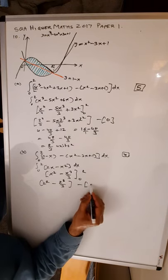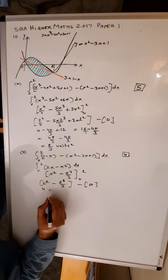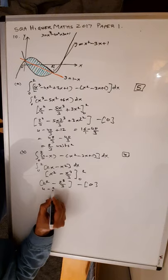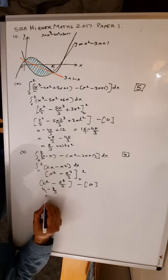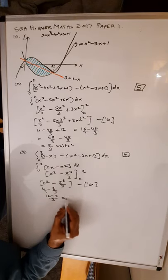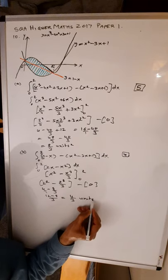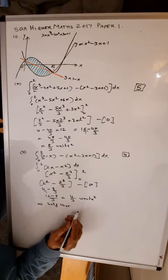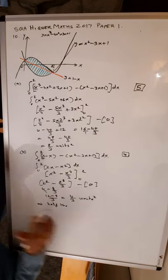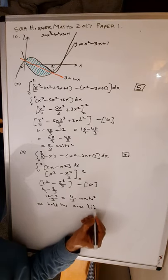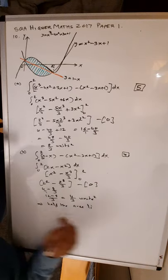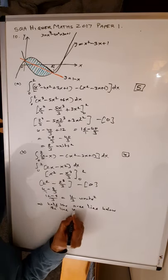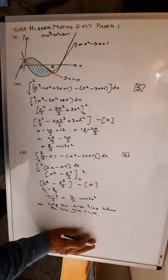That gives 4 minus 8 over 3. Multiplying through: 3 times 4 is 12, minus 8, all over 3, which gives 4 over 3 units squared. Since the total shaded area is 8 over 3, this means half the area lies below the line y equals 1 minus x. That is worth 4 marks.